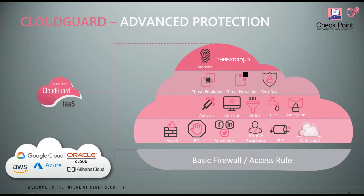Vamos a tener protecciones adicionales como la emulación de amenazas de día cero, la extracción segura de amenazas y la parte de forencia. La forencia nos va a decir el trazado de todo el malware durante su ejecución: desde cuál fue el vector de entrada, cuáles fueron las acciones en las instancias, cómo se vieron afectados los datos, y cuáles fueron las acciones de mitigación y remediación. Esta imagen resume perfectamente lo que la nube ofrece de forma básica: solamente es un firewall. Todas las protecciones avanzadas las brindamos nosotros.